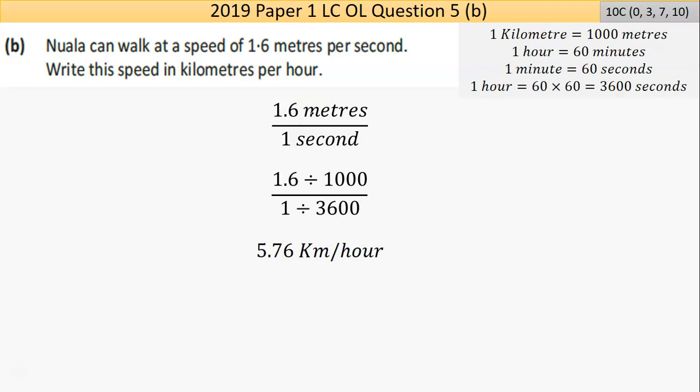It doesn't give me a much different answer than that. I'm going to convert the seconds to hours. So I'm going to divide that by 3600 to do that conversion. When I do that calculation, I end up with 5.76 kilometers per hour.